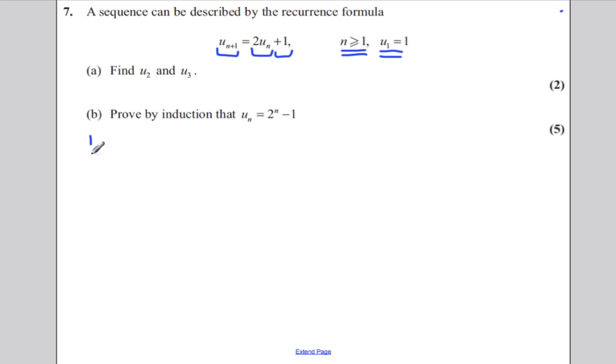For part B, prove by induction that Un is 2^n subtract one. Now, your hypothesis, your proposition is that Un is equal to 2^n subtract one.